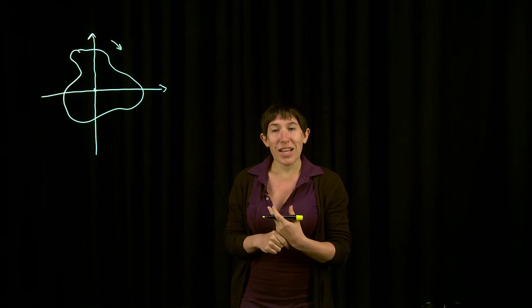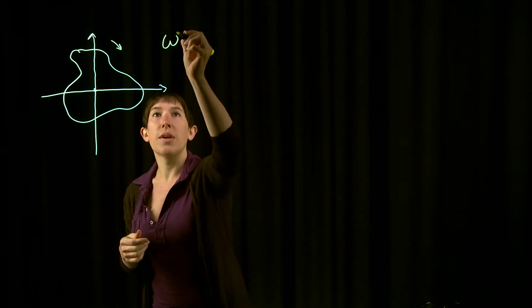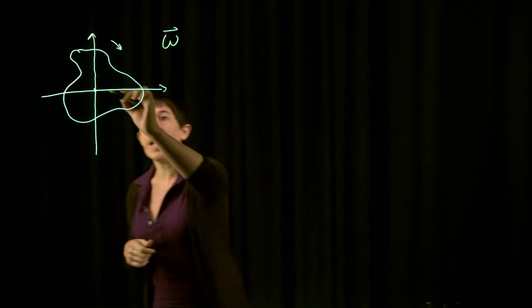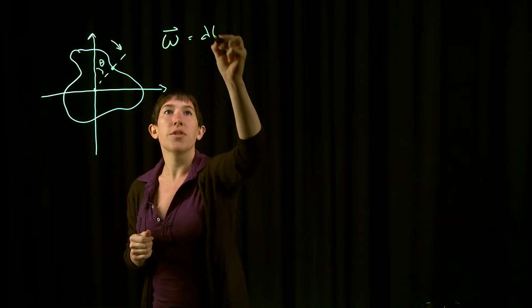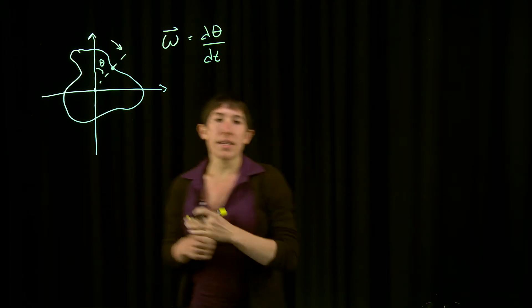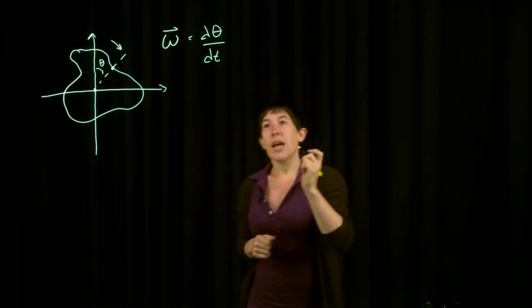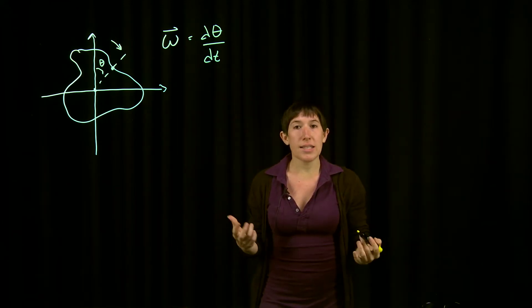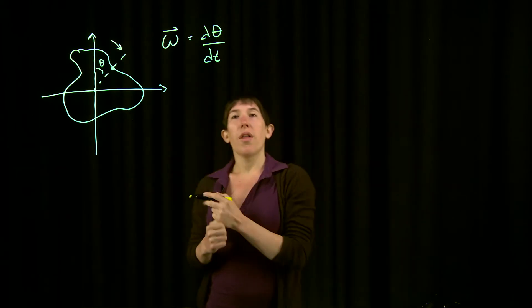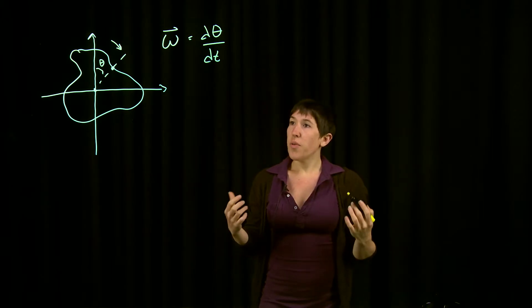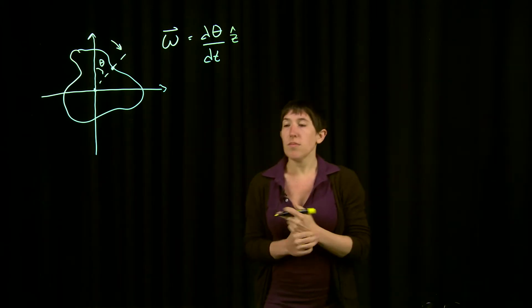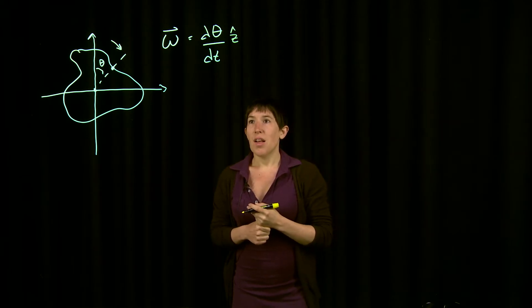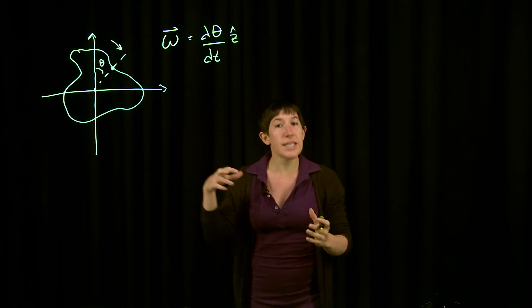The first quantity you might want to consider is the angular velocity, often denoted by omega. If we have some point with angular position theta, then omega is simply the time derivative of theta — it is the change in angle over time. You'll notice I wrote a little arrow over the omega because this is a vector, so on the right-hand side we also need a vector quantity. You find the direction of omega using the right-hand rule — in these coordinates that might be the z-hat direction.